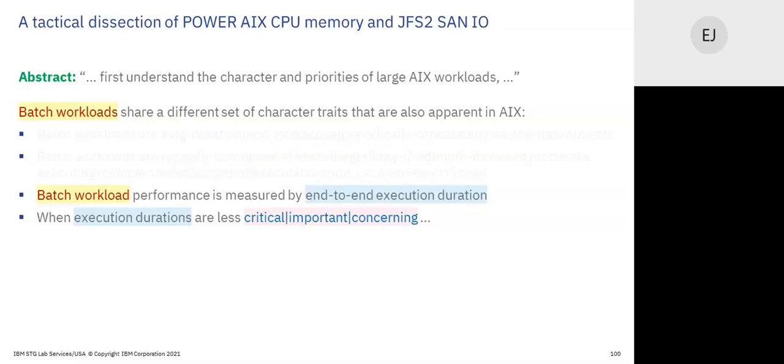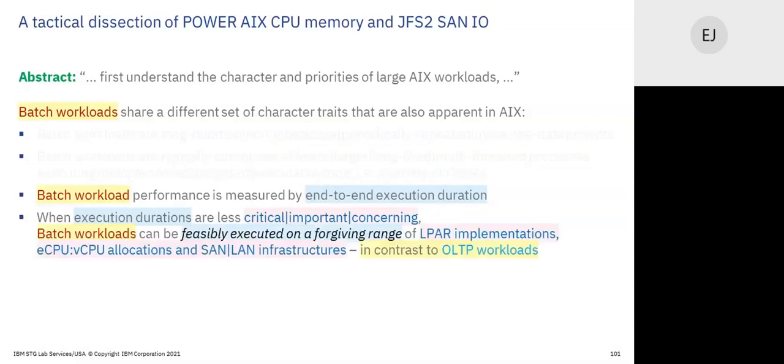Key point: when execution durations are less critical, batch workloads run on anything. You abuse the heck out of them and they'll run — over entitlement, over memory — they don't crash very easily. This is in great contrast to OLTP workloads. Batch workloads do not require a reserve of core capacity to attend to volatility, because there's no concern for responsiveness.